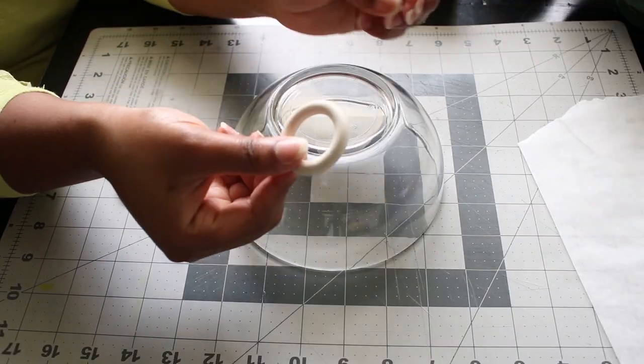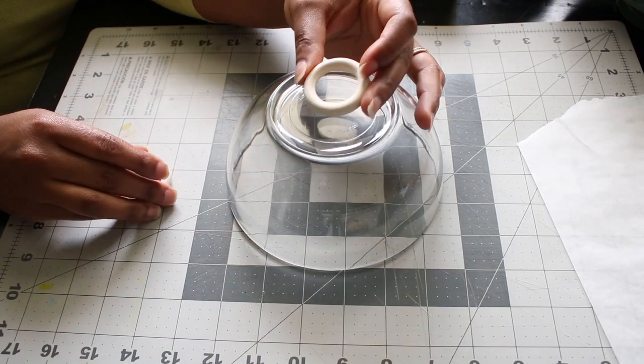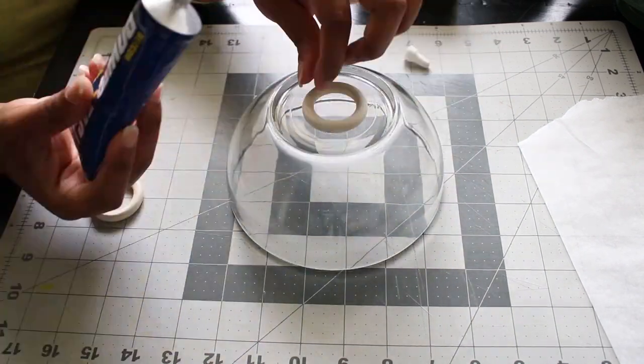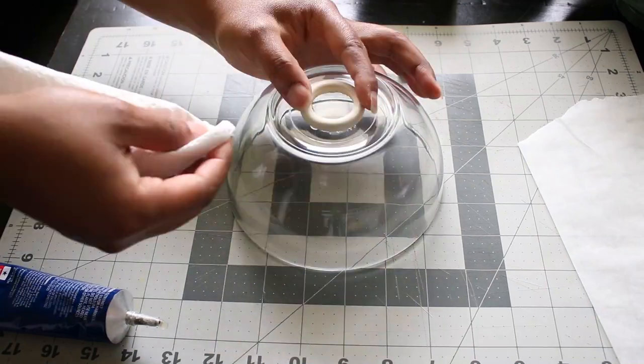I took two of these wood rings that I recently found at Dollar Tree to create the look of a handle on top of the bowl, and I glued them in place like this.